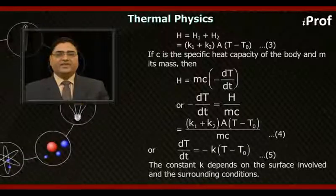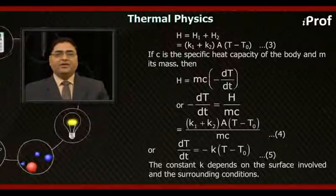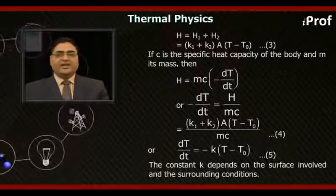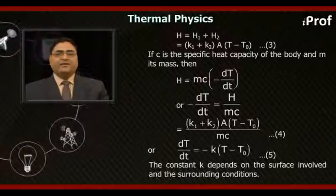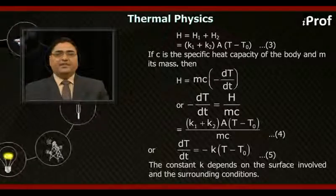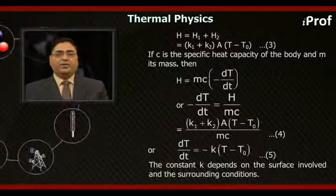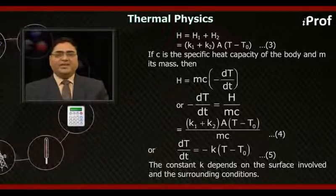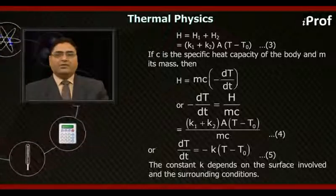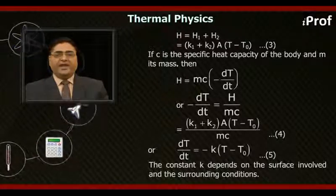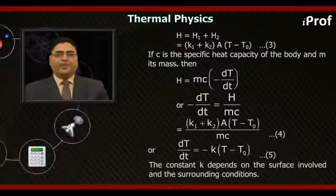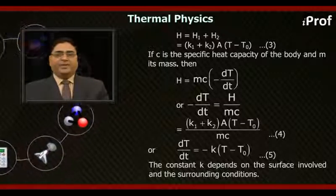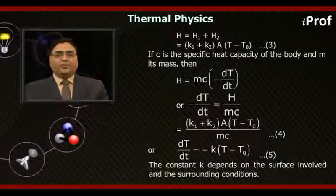If C is the specific heat capacity of the body and M its mass, then H equal to MC in bracket minus dT upon dt, or minus dT upon dt equal to H upon MC equal to K1 plus K2 A times T minus T0 upon MC, or dT upon dt. That is, rate of cooling equal to. Now note down the special points.